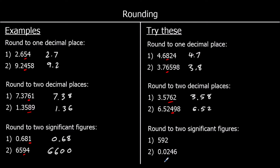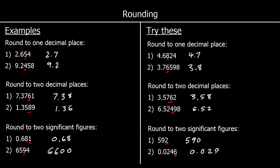Significant figures: we start counting at the first non-zero number, so we're going to have the 500 and the 90. Then we look at the next one — is it closer to 590 or 600? It's a 2, so it's going to stay as 590. And the last one: we don't count the zeros in front, we start counting at the first non-zero number. So we've got the 2 hundredths and the 4 thousandths — is it 5 or above? It is, so it's going to round up to 0.025.